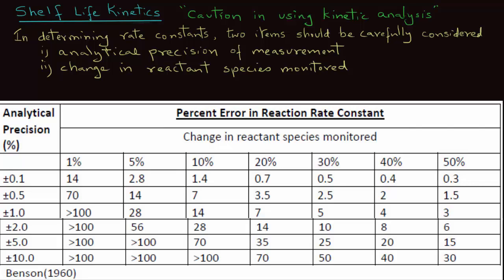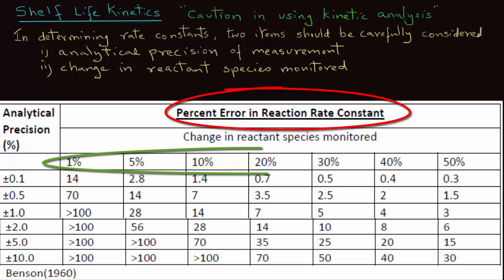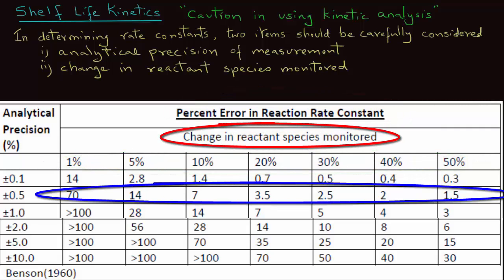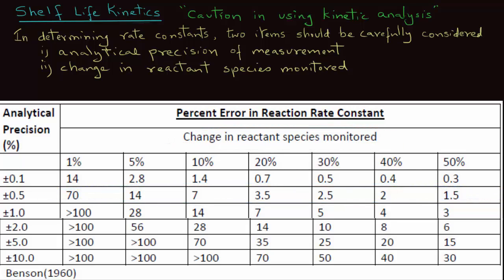This is the precision in using any type of analytical measurement and the percent error in reaction rate constant. And that percent error depends on how much change in the reactant species was monitored during the time the experiment was conducted.